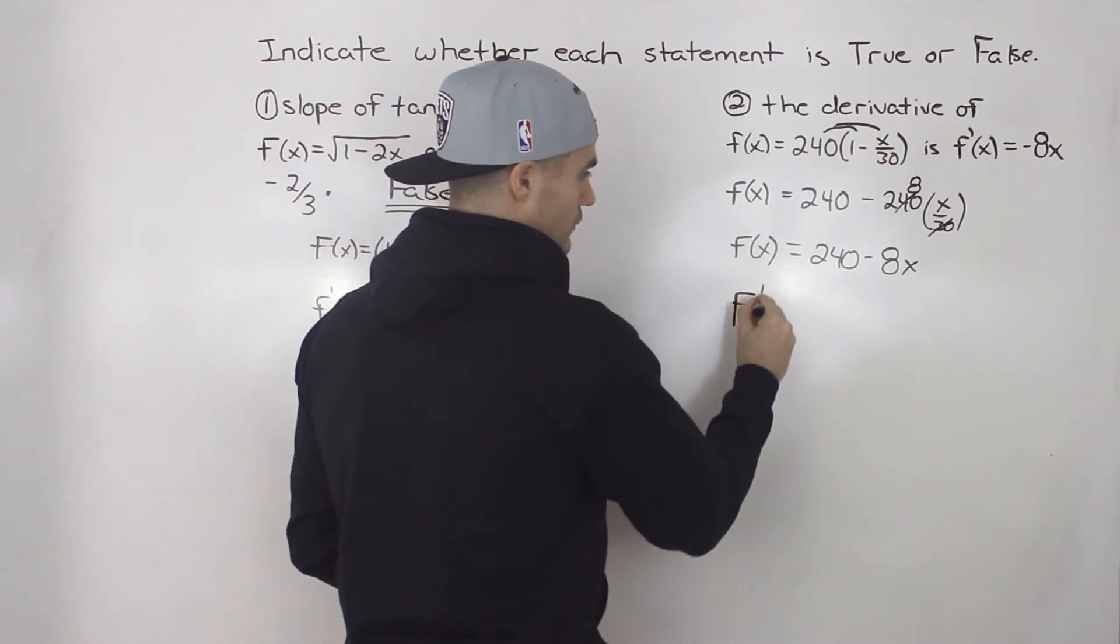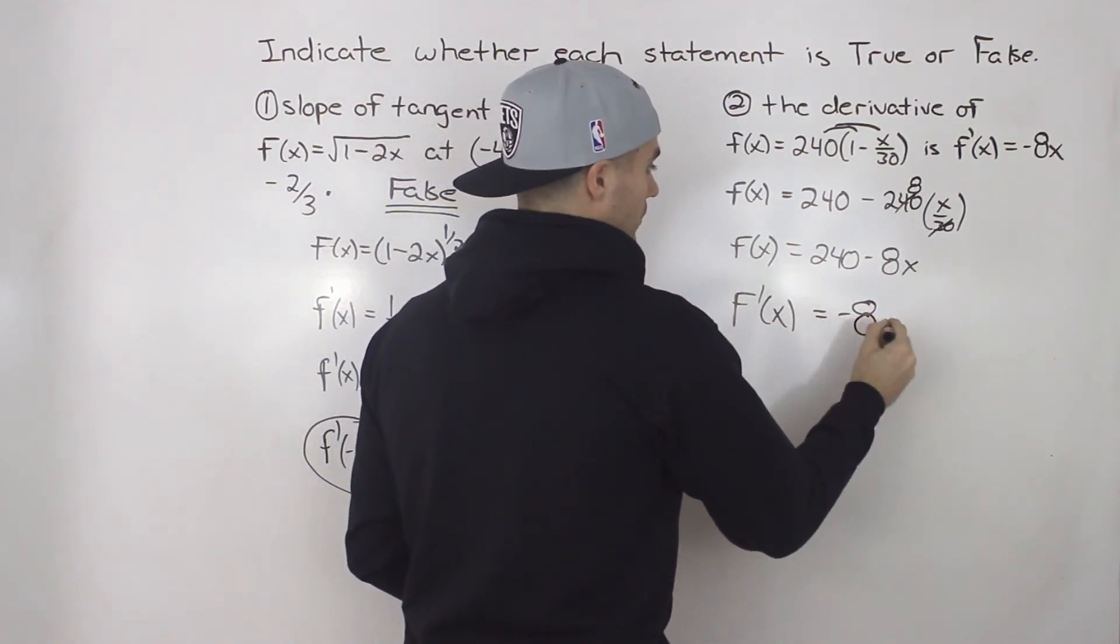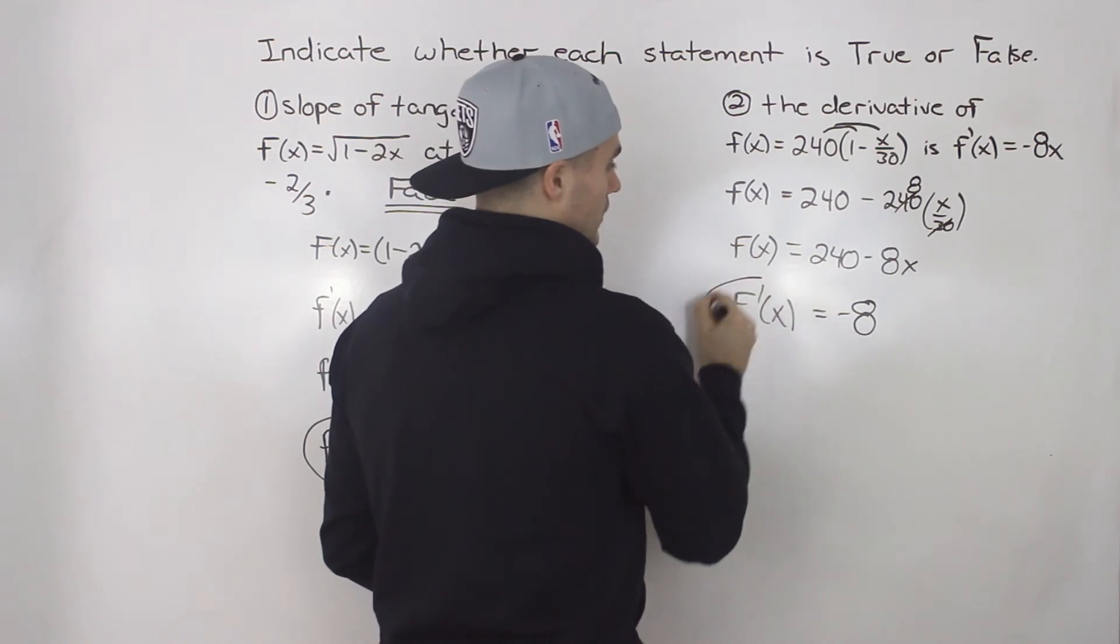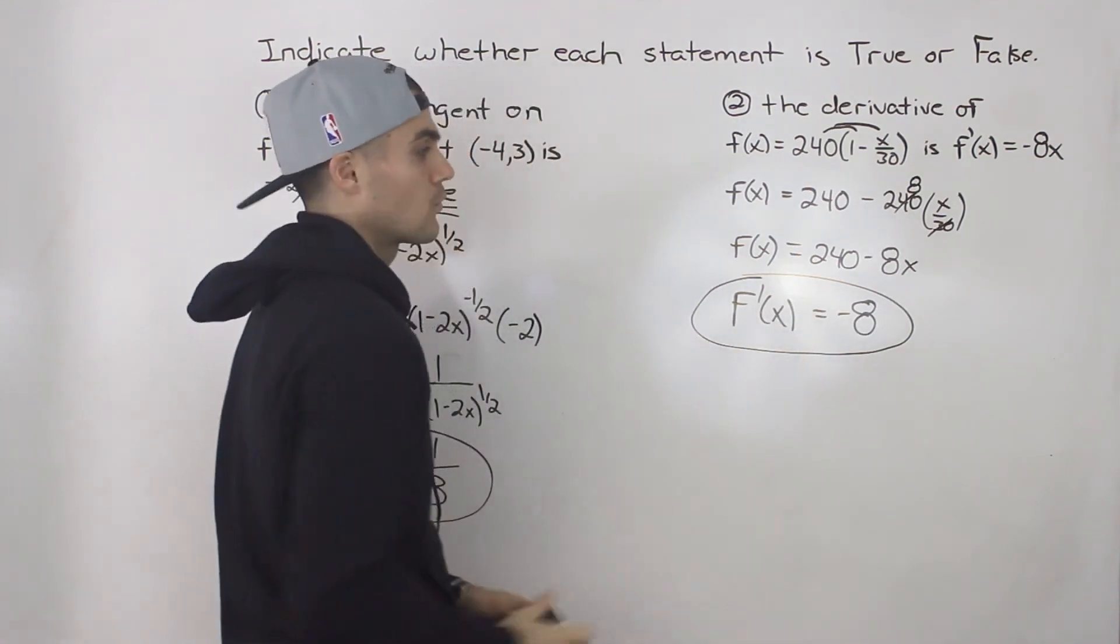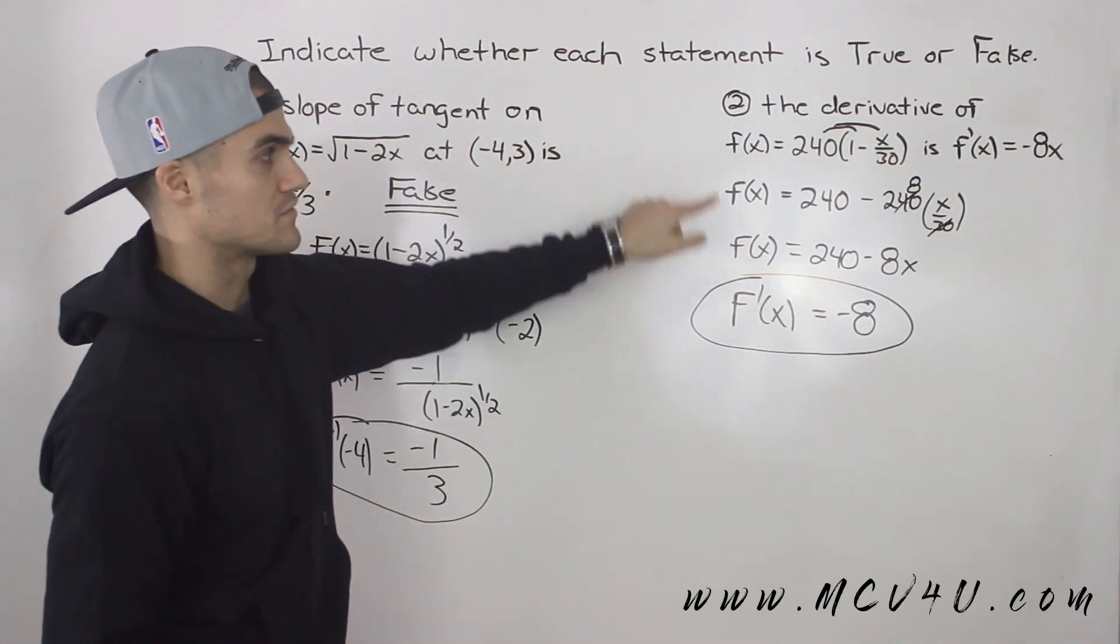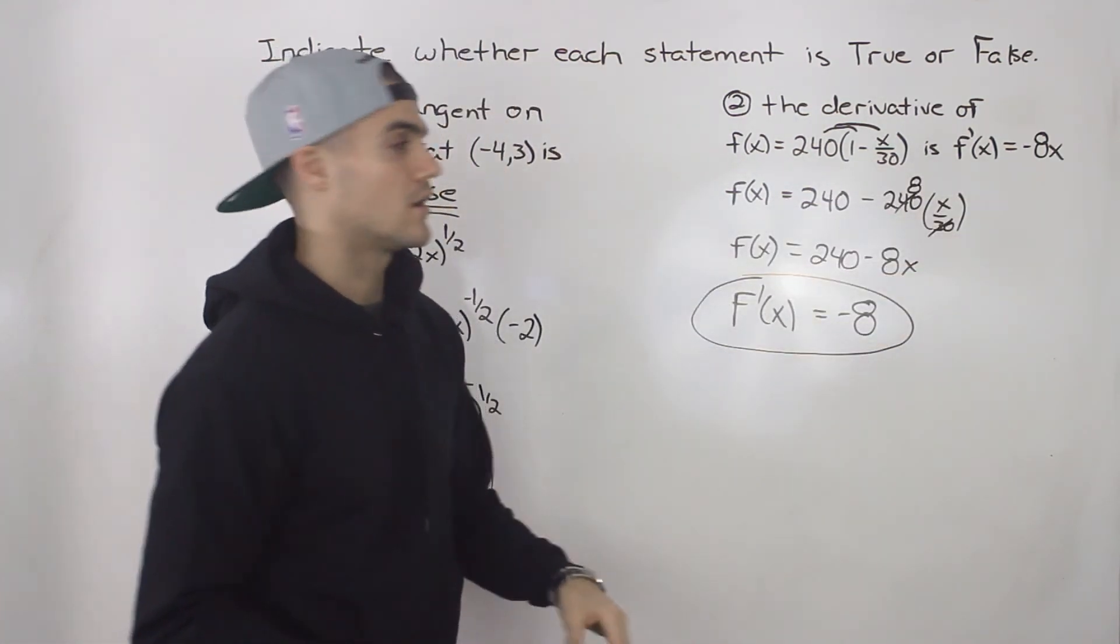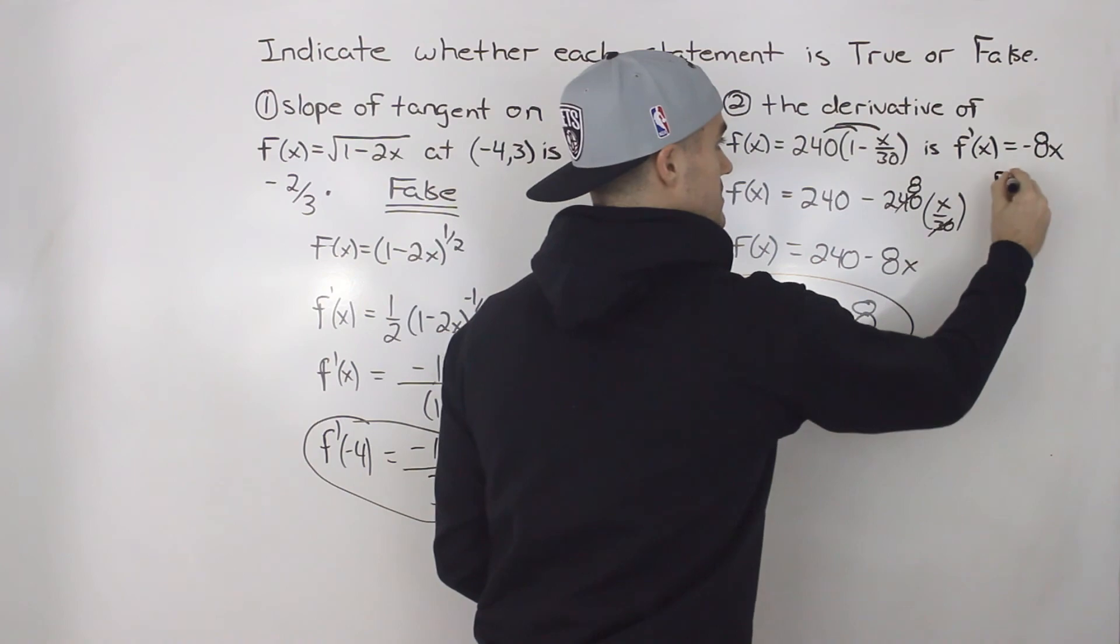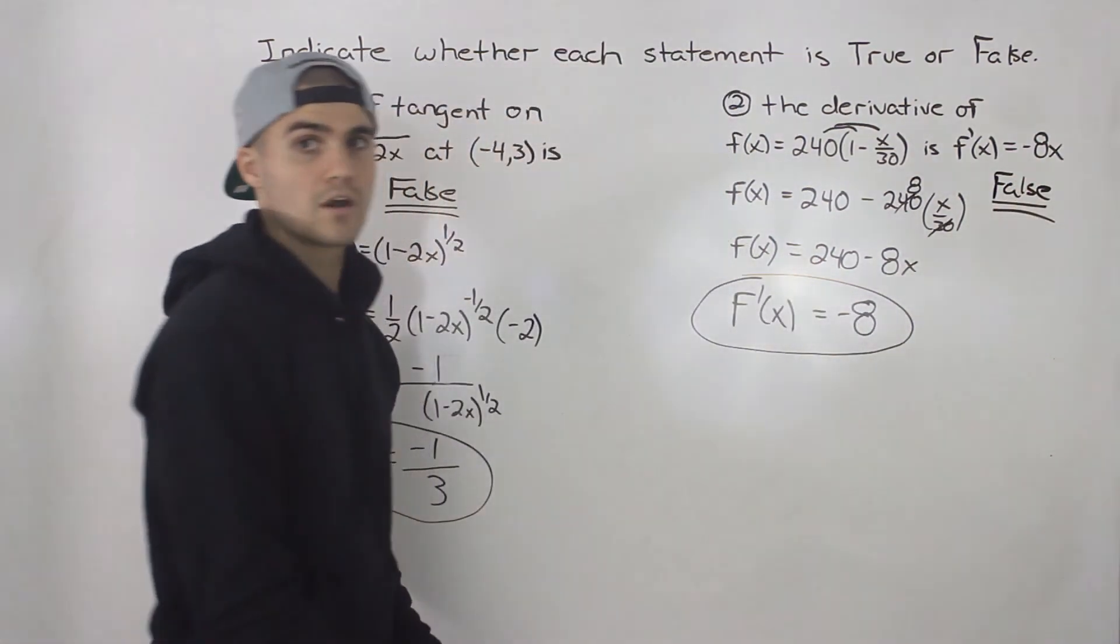So now we got this function 240 - 8x. And then the derivative of this is simply going to be -8 when we apply the power rule. So the derivative to this function here is -8 always, no matter what x value you plug in. So this statement is false. The derivative is not -8x. It's just -8, the constant. Both statements are false.